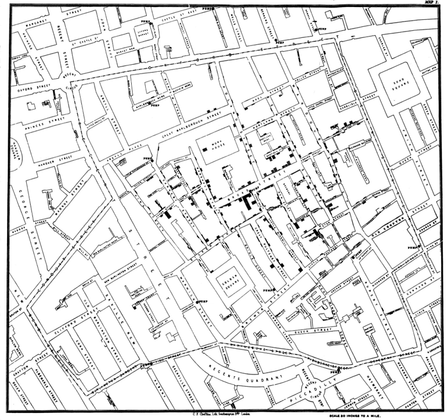Economic Geography examines relationships between human economic systems, states, and other factors, and the biophysical environment. Subfields include marketing geography and transportation geography. Health geography is the application of geographical information, perspectives, and methods to the study of health, disease, and health care. Health geography deals with the spatial relations and patterns between people and the environment. This is a sub-discipline of human geography, researching how and why diseases are spread.